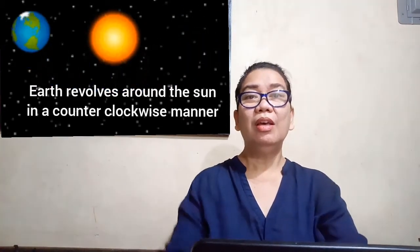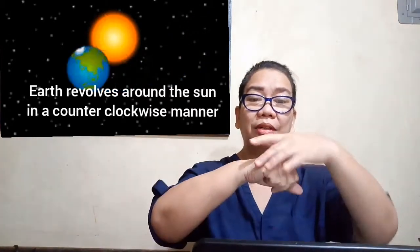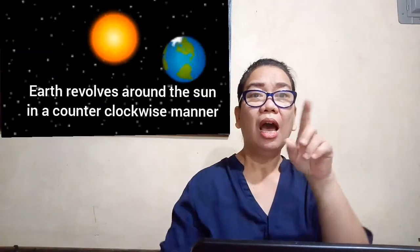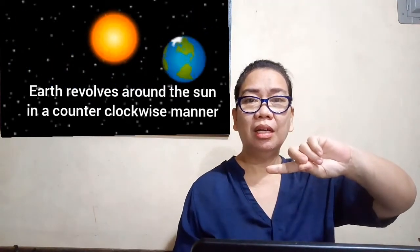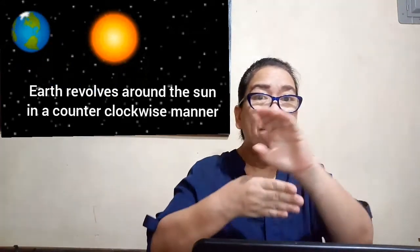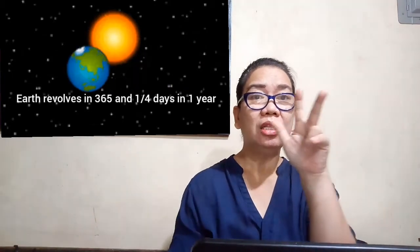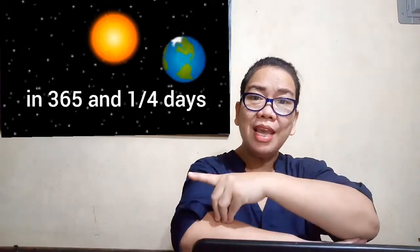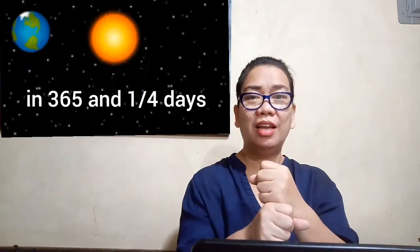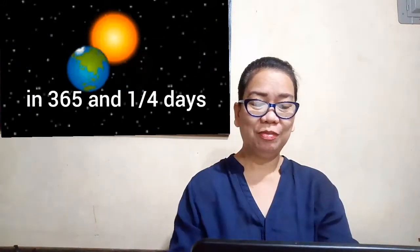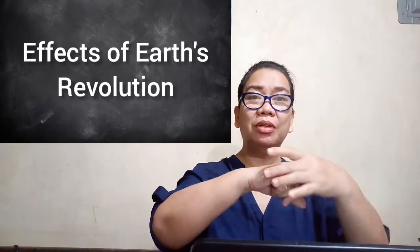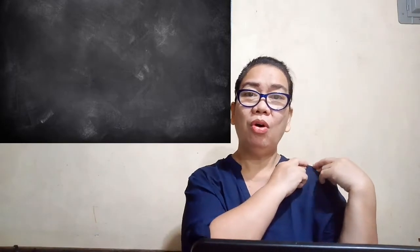You must remember that Earth revolves around the Sun in a counterclockwise manner. It has one complete revolution in 365 and one-fourth days in one year. The revolution of the Earth is responsible for changing the seasons.